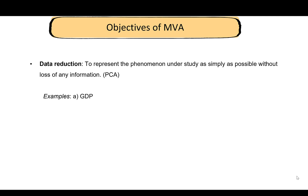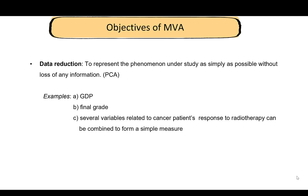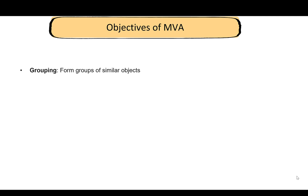An example of data reduction is GDP, or Gross Domestic Product, which is a function of many variables indicating the financial health of a country. A simpler example is your final grade — combining grades from different courses into one measure. In health, you can collect several variables related to cancer patients' response to radiotherapy and combine them to assess how well the treatment is working.